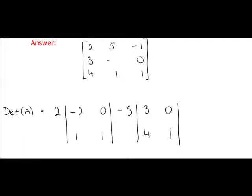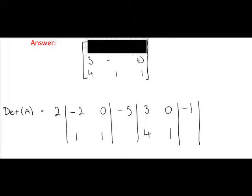Finally, we take the last number in the top row, which is minus 1. Put it down. Again, we cover the row that minus 1 is on, and the column that minus 1 is on. We're left with 3, minus 2, 4, 1.